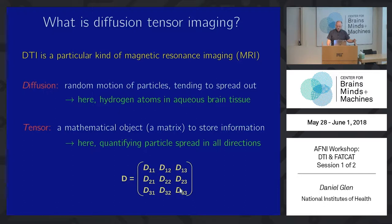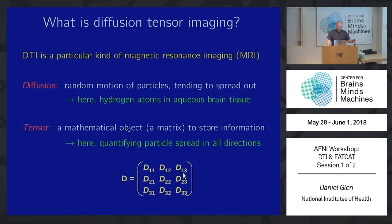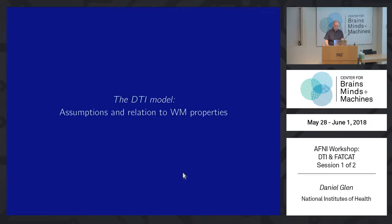The tensor has x, y, z components — diffusion in the x, y, and z along the diagonals, and then combinations of x and y on the off-diagonals. We use it in MRI for looking at white matter, usually.